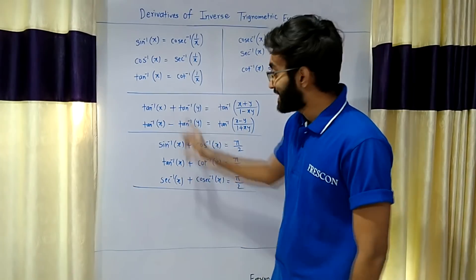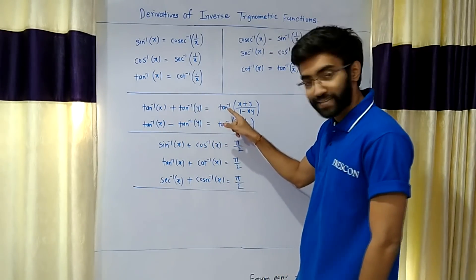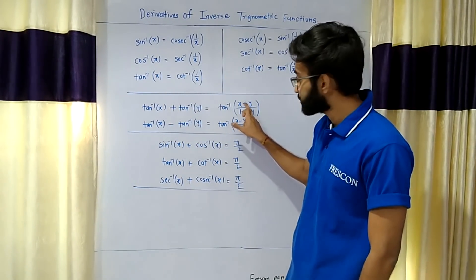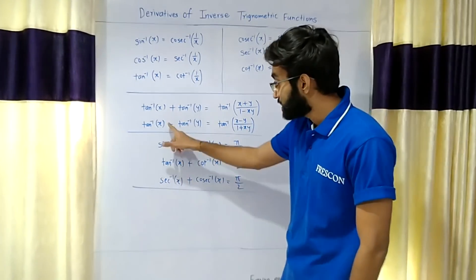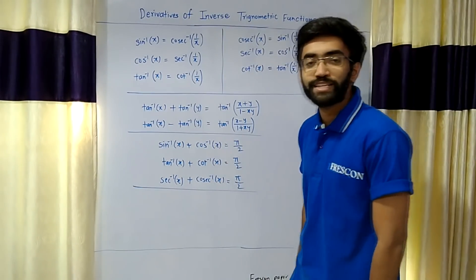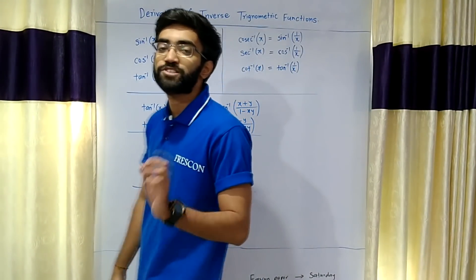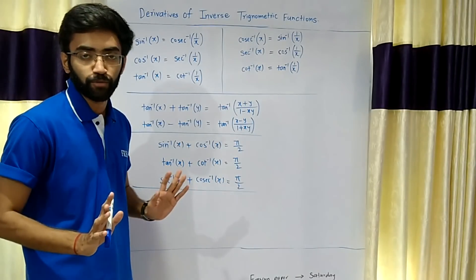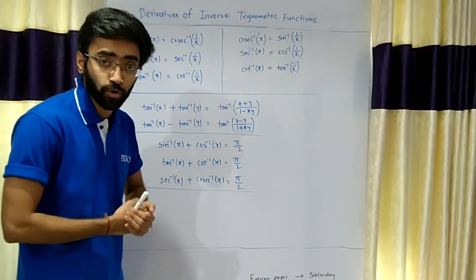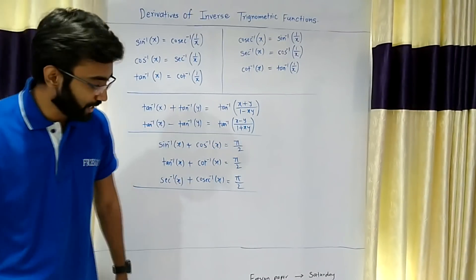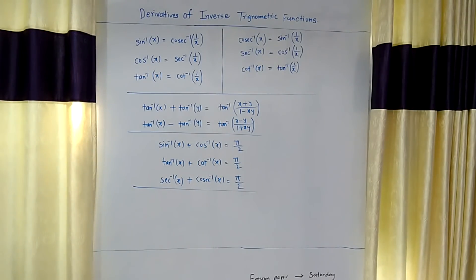These two are important: tan inverse x plus tan inverse y equals tan inverse of (x plus y) upon (1 minus xy). Please note this down. We will go to the next part.